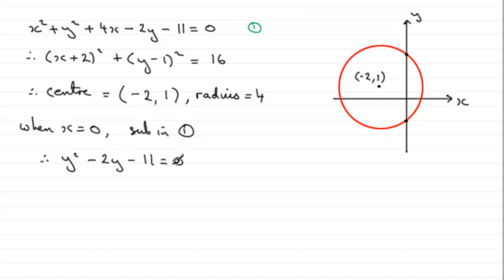Now the question said, give your answers as simplified surds, which is a bit of a clue actually, that this is not going to factorise, that we're going to need to use the quadratic formula.